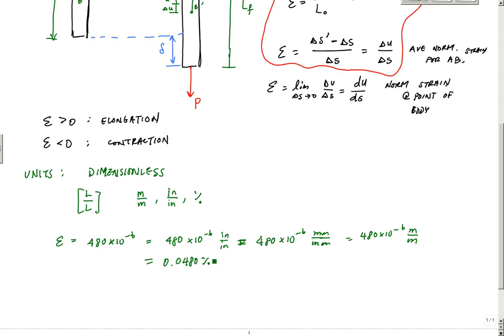And again, this is all equivalent. And sometimes, because this 10 to the minus 6 actually occurs a lot, it's even expressed this way. We might say it's 480 micro inch per inch. And this micro is just another way to say 10 to the minus 6. Or we might say 480 micrometers per meter. And so another way to call this is microstrain. So that's just another way to do it. And these are some of the units.